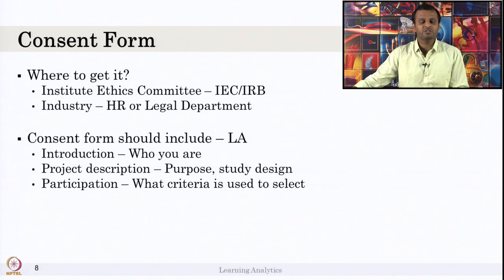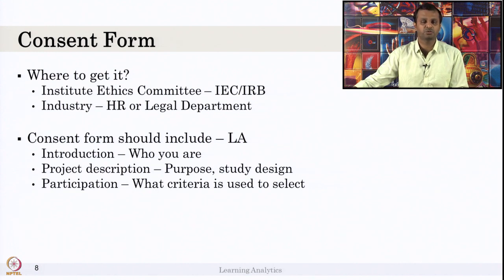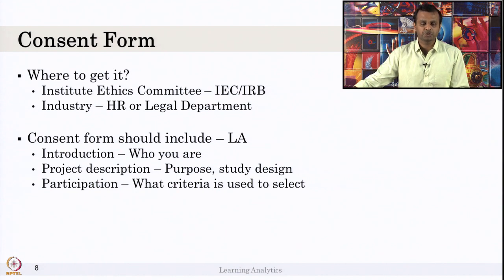You should also explain why you selected this particular site or type of student. For example, if you want to know about students' background knowledge upon joining an MCA program, you might select only first-year MCA students. The participation criteria, based on your research question, should be clearly explained in the consent form.